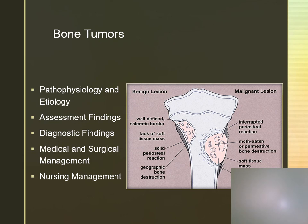Benign bone tumors are the more common of the bone tumors and have the potential of causing fractures. Basically these are overgrown clusters of normal bone cells with slow growth, no metastasis, occurring in bone that is still growing. These clients may experience pain, deformity, and swelling. We diagnose with x-rays, bone scans, and potentially biopsies. We treat with surgery, curettage, bone grafts, splints, or casts.